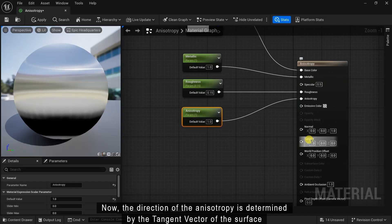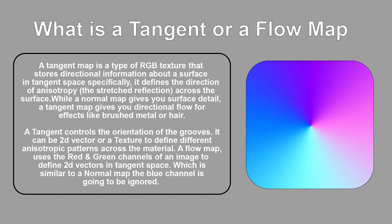The direction of anisotropy is determined by the tangent vector of the surface. So what is a tangent map? A tangent map is a type of RGB texture that stores direction information about a surface in tangent space. Specifically it defines the direction of anisotropy across the surface. While a normal map gives you surface detail, a tangent map gives you directional flow for effects like pressed metal or hair. A tangent controls the orientation of the grooves and it can be a 2D vector or a texture to define different anisotropic patterns across the material.